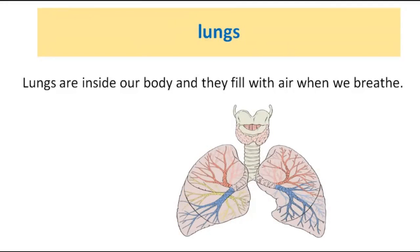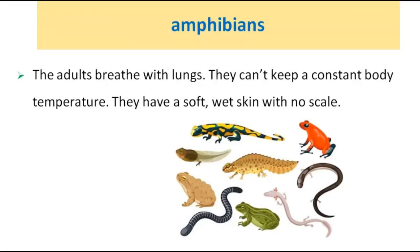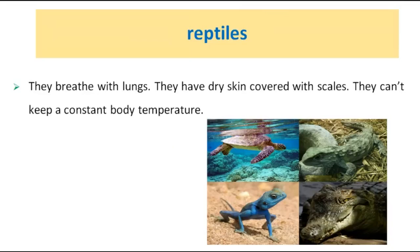Lungs: lungs are inside our body and they fill with air when we breathe. Amphibians: the adults breathe with lungs, they can't keep a constant body temperature, and they have soft, wet skin with no scales. Reptiles: they breathe with lungs, they have dry skin covered with scales, and they can't keep a constant body temperature.